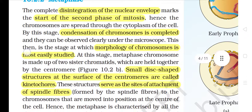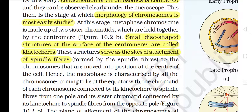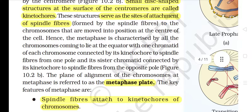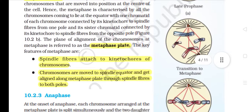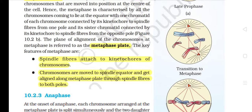Small disc-shaped structures at the surface of the centromeres are called kinetochores. These structures serve as the sites of attachment of spindle fibers to the chromosomes that are moved into position at the center of the cell. Hence, metaphase is characterized by all the chromosomes coming to lie at the equator, with one chromatid of each chromosome connected by its kinetochore to a spindle fiber from one pole and its sister chromatid connected by its kinetochore to a spindle fiber from the opposite pole. The plane of alignment of the chromosomes at metaphase is referred to as the metaphase plate. Key features: spindle fibers attached to kinetochores, chromosomes aligned along the metaphase plate through spindle fibers to both poles.